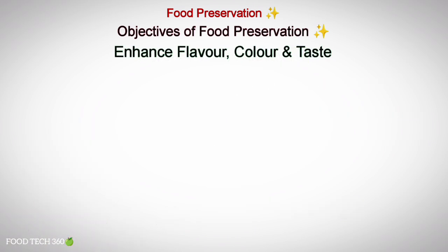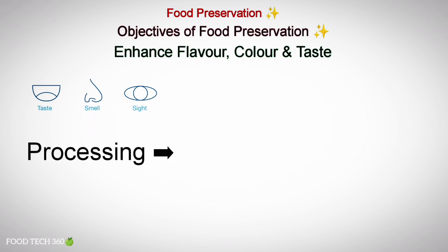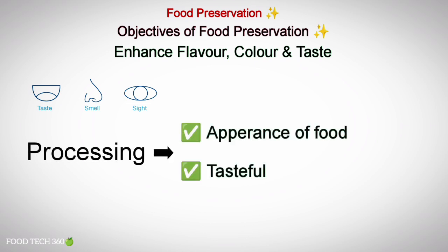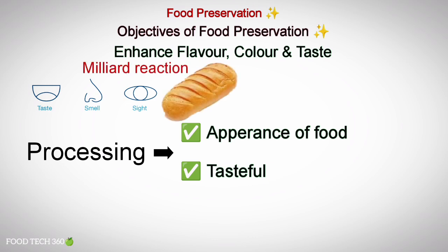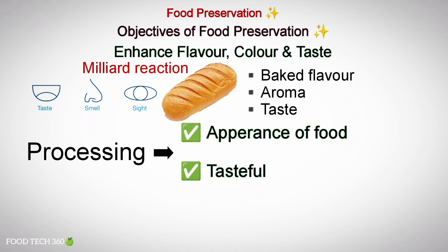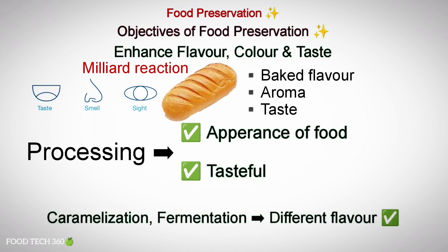The next objective is to enhance flavor, color and taste. The acceptability of food depends on its organoleptic qualities. Processing techniques enhance the appearance of food and many techniques make food more tasteful. The browning crust is formed due to the Maillard reaction, which gives bakery items their baked flavor, aroma and taste. Processing such as caramelization and fermentation gives food a different flavor.